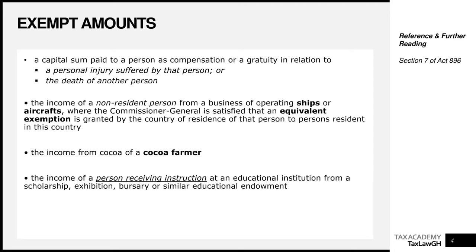The next is the income of a non-resident person who operates a business of ships or aircraft, where the Commissioner General is satisfied that an equivalent exemption is granted by the person's country of residence to persons who are Ghanaian residents. For example, if a ship operator is from Germany, the only condition under which income earned in Ghana will be exempt is if Ghanaian ships in Germany's territorial waters enjoy this equivalent exemption. You exempt me, I exempt you — that's the principle.